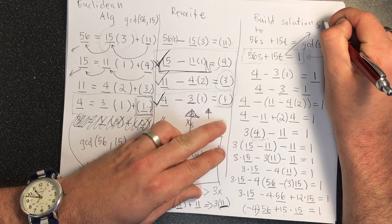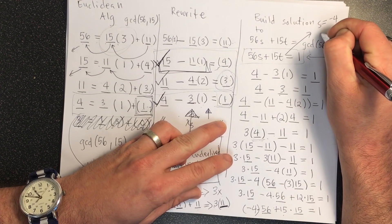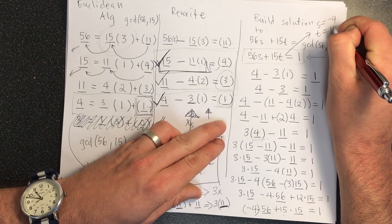For this, we have that s is equal to minus 4, and t is equal to 15.